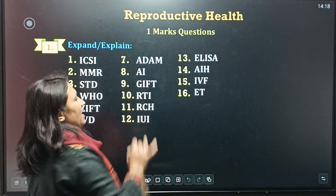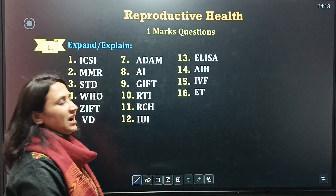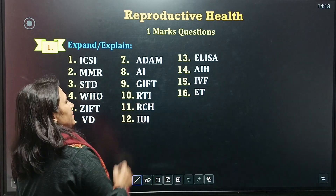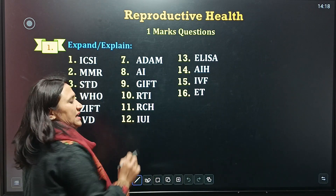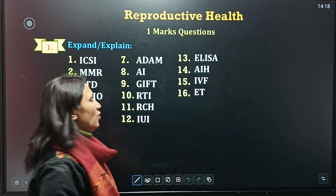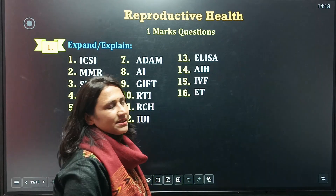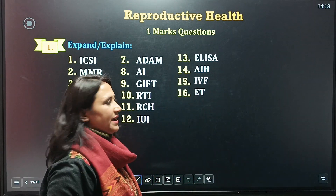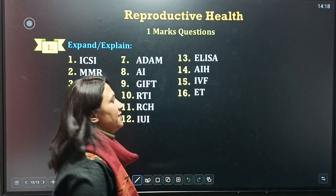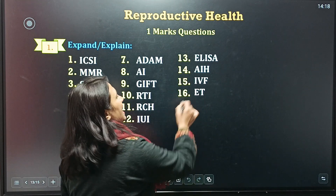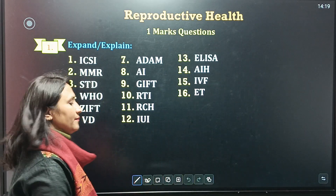Then ADAM, AI, GIFT, RTI. Eleventh term is RCH. Twelfth is IUI, then ELISA, and fourteenth is AIH, then IBF. Last but not the least is ET.